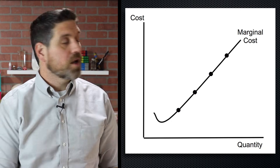But if the ATC is up here, you're going to be making a loss. But since you're making a loss anyway, it's best to produce where MR equals MC, because the profit-maximizing rule is also the loss-minimizing rule. This is a loss, but it's the smallest possible loss that you can get. If you produce more output or less output, you're going to end up with a bigger loss. So you always produce where MR equals MC.